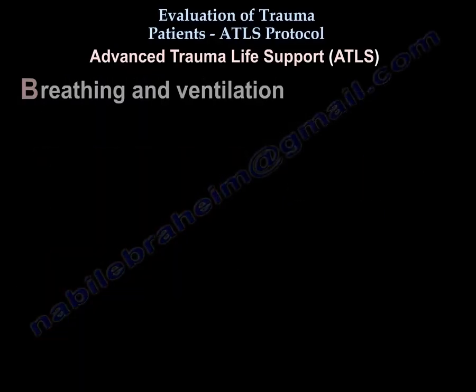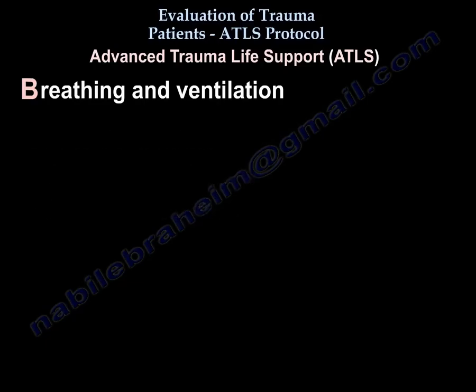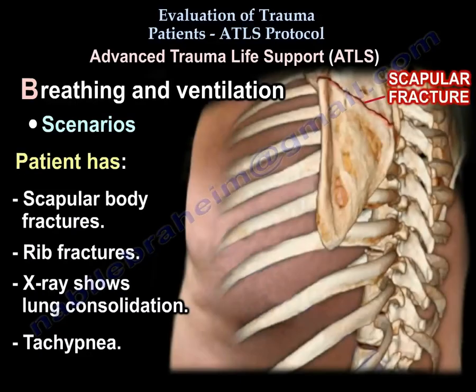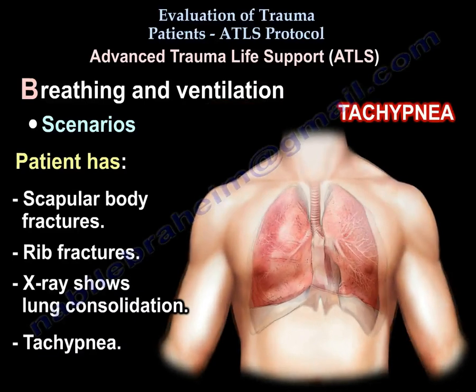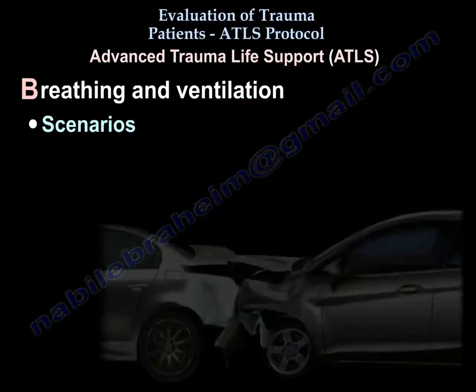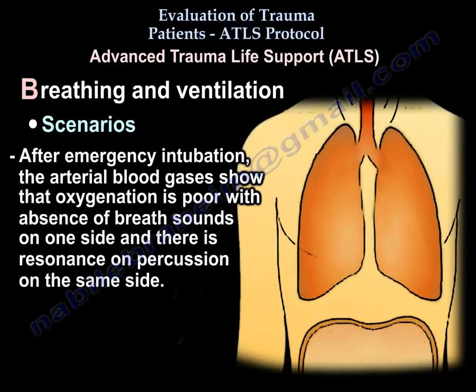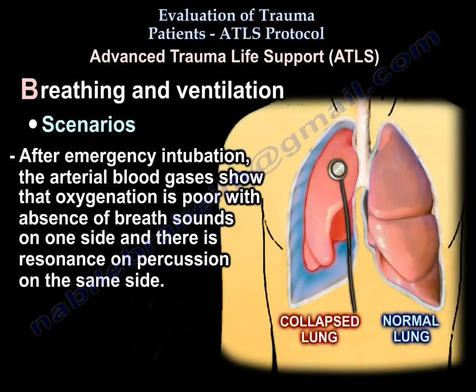The second priority is breathing and ventilation, usually evaluated clinically but also visible on chest X-ray or arterial blood gases. Example scenarios include: a scapular body fracture with multiple rib fractures and X-ray showing lung consolidation with the patient tachypneic, or a patient from a car accident in respiratory distress where after emergency intubation the arterial blood gases show poor oxygenation.